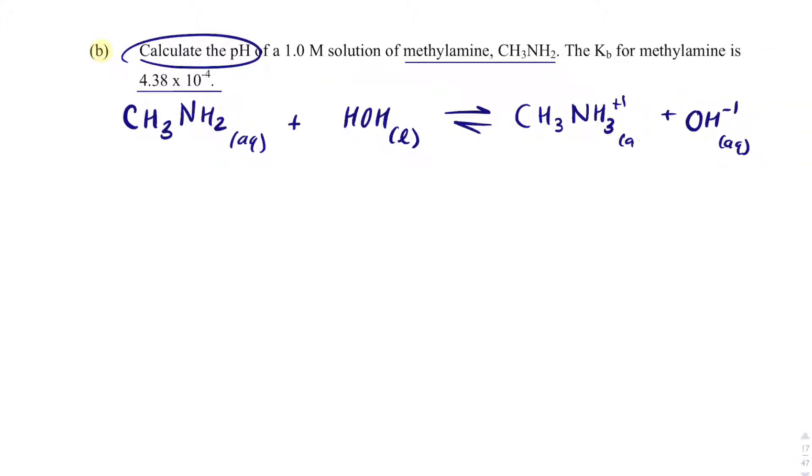Okay, now I'm going to build a rice table. Liquid water is just going to be an X. This initial concentration of methyl amine is 1.0 molar, 0, and 0. So we're going to subtract X, 1.0 minus X, plus X, plus X, we get X and X.